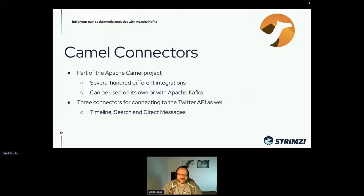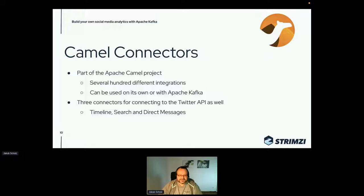In my particular example and demos, I will use the connectors which are part of the Apache Camel project. Apache Camel is one of the biggest Apache Software Foundation projects, which has several hundred different integrations and ways to connect with systems or platforms and exchange data. There were some other talks here about Camel K for serverless usage, but I will use it in the form of a connector for Kafka Connect — specifically three different connectors that leverage the Twitter API: timeline, search, and direct messages connectors.